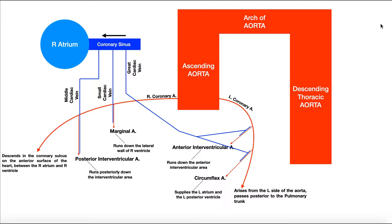In this video, we're going to take a slightly different approach to learning the coronary circulation. A lot of times when you're learning coronary circulation, you're looking at an anatomical picture of the heart, and it can be easy to get lost in the details. So what I've done here is taken a schematic approach to learning how the coronary circulation actually works. We're going to see where a lot of these arteries and veins originate from and ultimately where the veins deliver blood back to the heart.